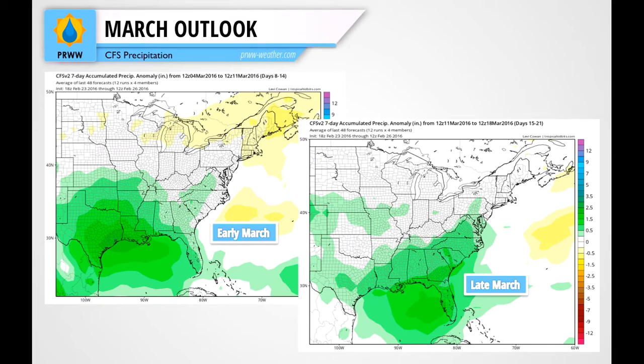Switching over to precipitation, early March the CFS is balancing out the two biggest factors. We have the negative NAO, where we're going to see storm tracks moving up the coast, which favors a lot of precipitation, while the Phase 8 MJO favors less precipitation. So the CFS is balancing those two out, which is why it's saying near average for precipitation in early March. Later in March, we're going to see precipitation increase according to the CFS.